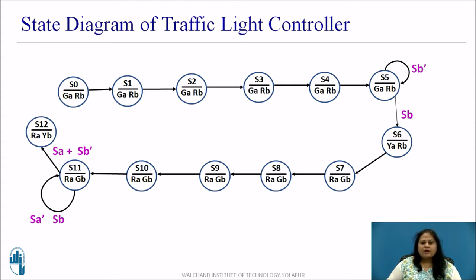Now before the green of state A is turned on in S12 first, the yellow of street B is turned on. Till then red of street A is on and for the next clock pulse state transition takes place and the state moves to initial state S0 making green of the street A on and the cycle completes. Thus this is the complete state diagram obtained for the traffic light controller considered.